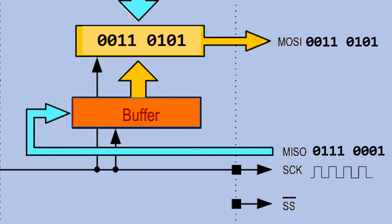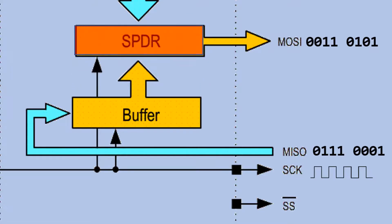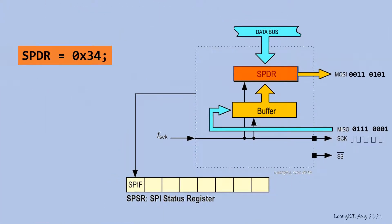Once 8-bit of data is exchanged, the data in the buffer is transferred to the SPDR register. The microcontroller sets the SPIF flag to 1 to indicate the completion of the SPI transfer.